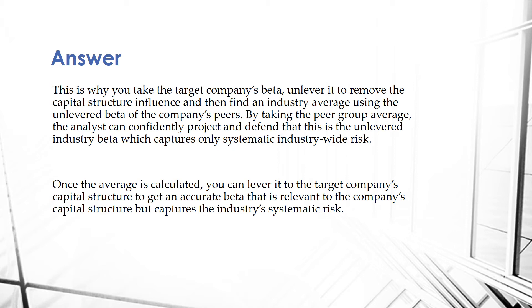This is why you take the target company's beta, unlever it to remove the capital structure influence, and then find an industry average using the unlevered betas of the company's peers. By taking the peer group average — looking at your target company and choosing additional companies that operate in similar industries or the same market — you take the average of their unlevered betas. The analyst can then confidently project and defend that this is the unlevered industry beta, which captures only systematic, industry-wide risk. Once the average is calculated, you lever it back to the target company's capital structure to get an accurate beta that captures the industry's systematic risk.